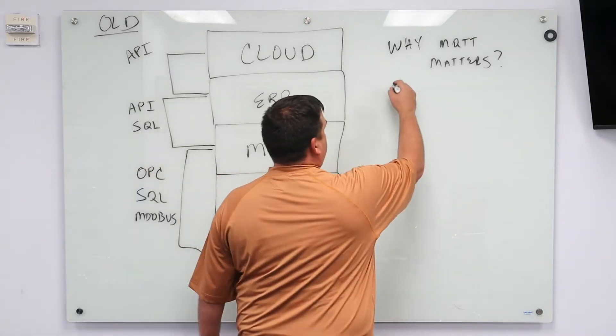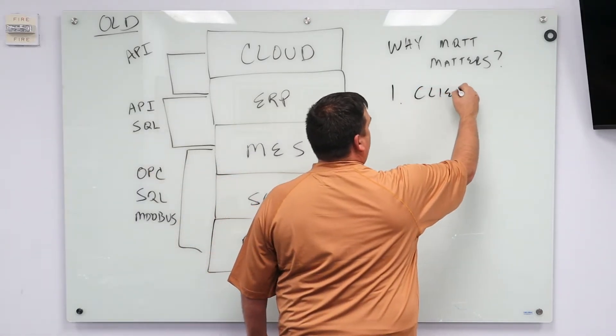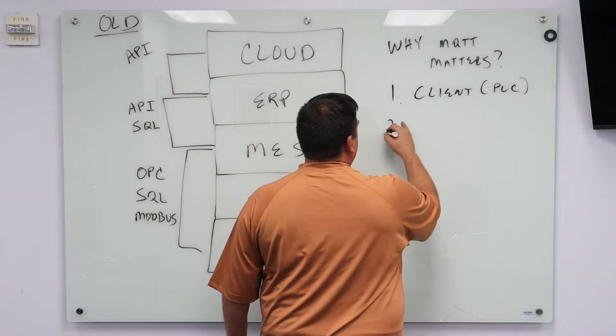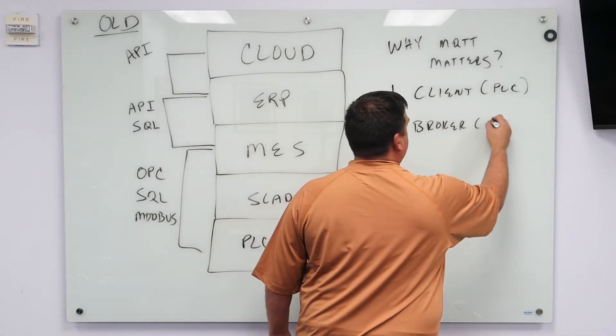But I'm going to go a little bit more into how MQTT works. It's very simple. Basically a client, which could be our PLC and it speaks MQTT, connects to a broker and that broker is our server.